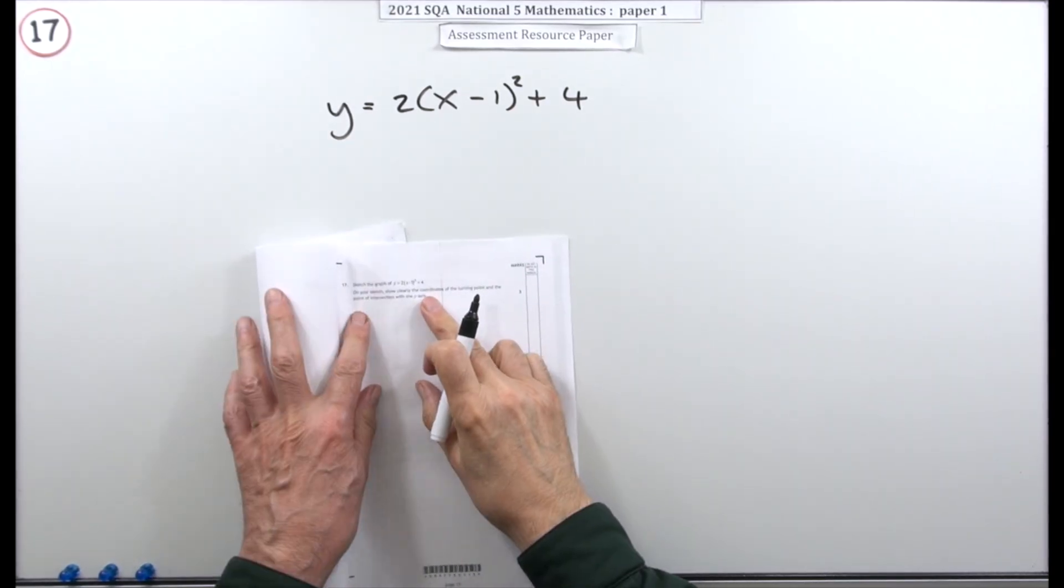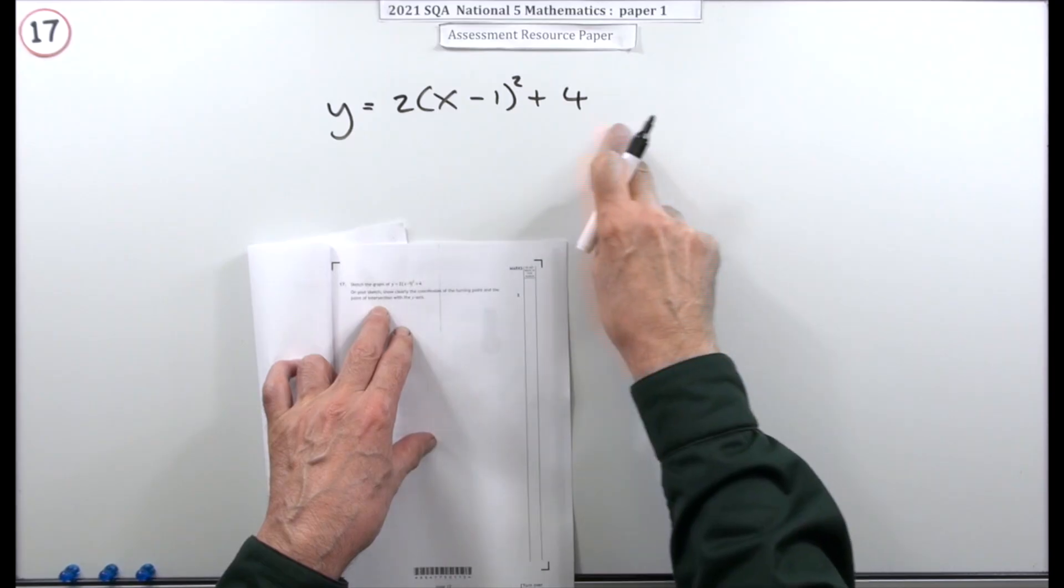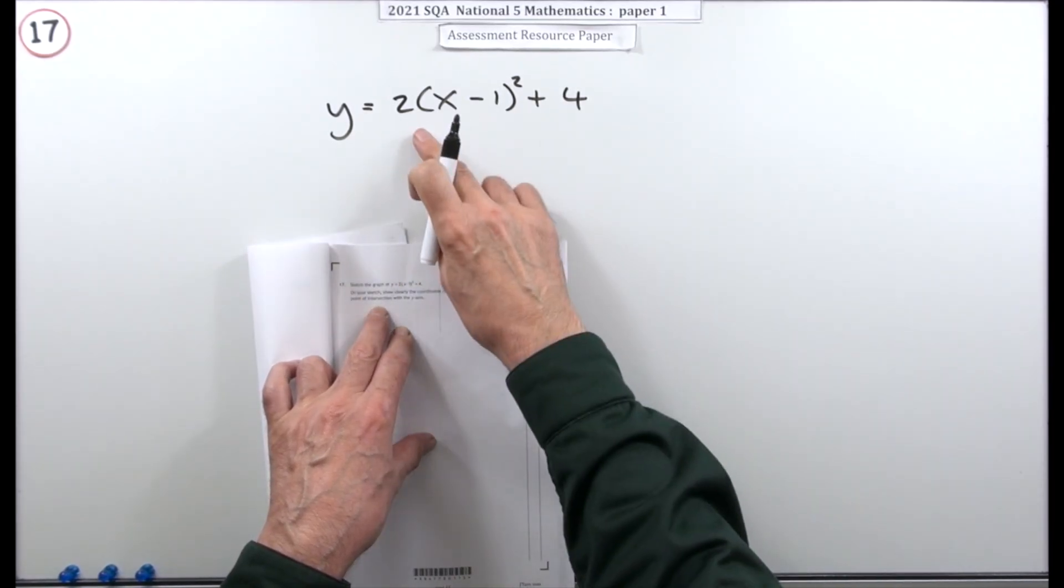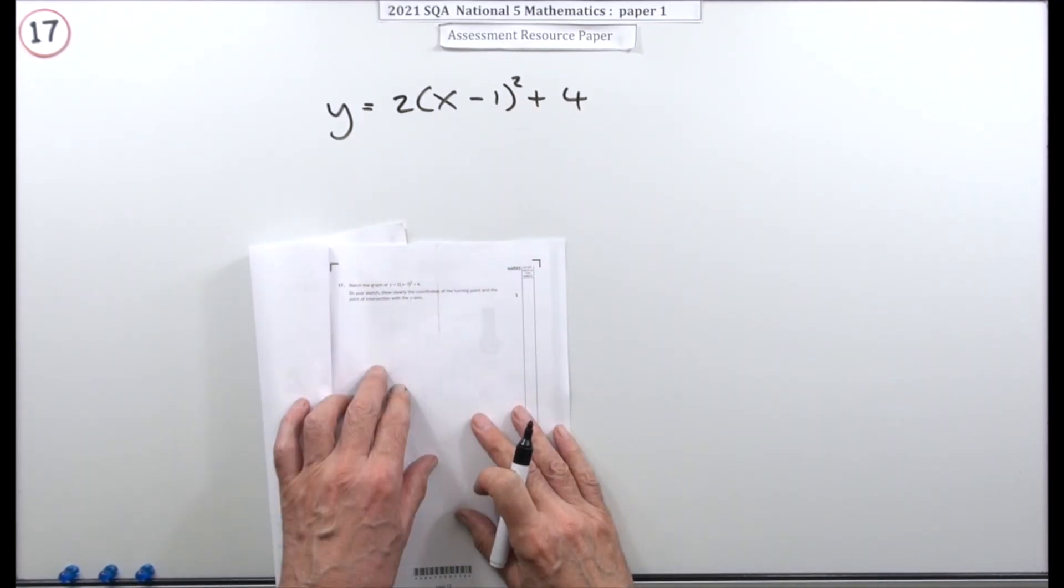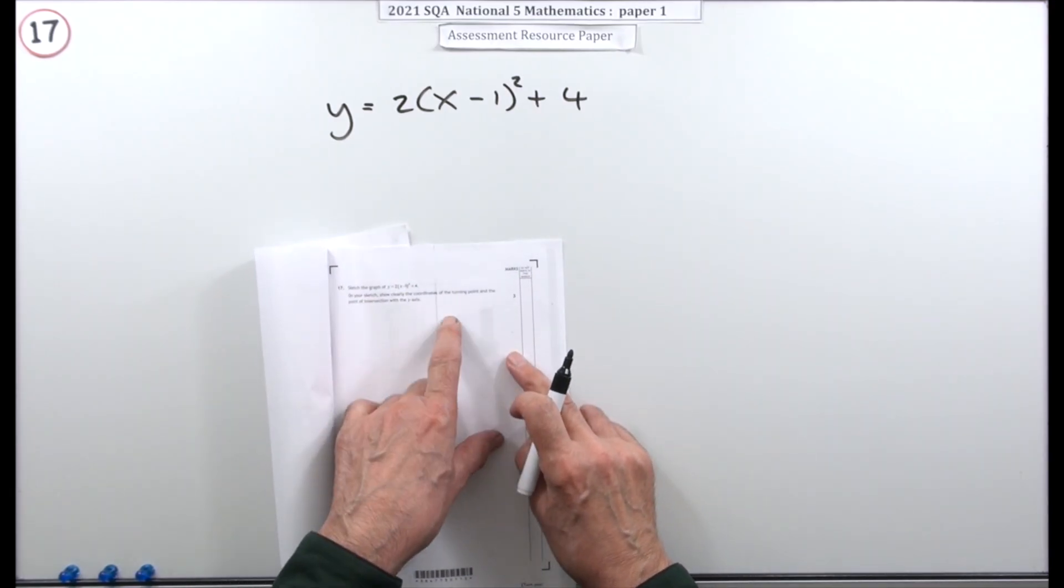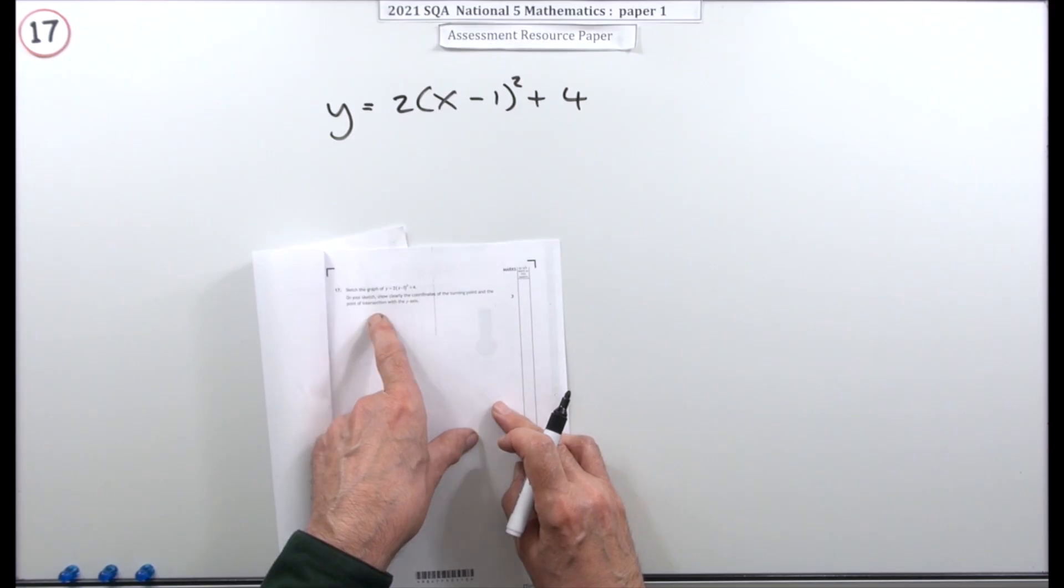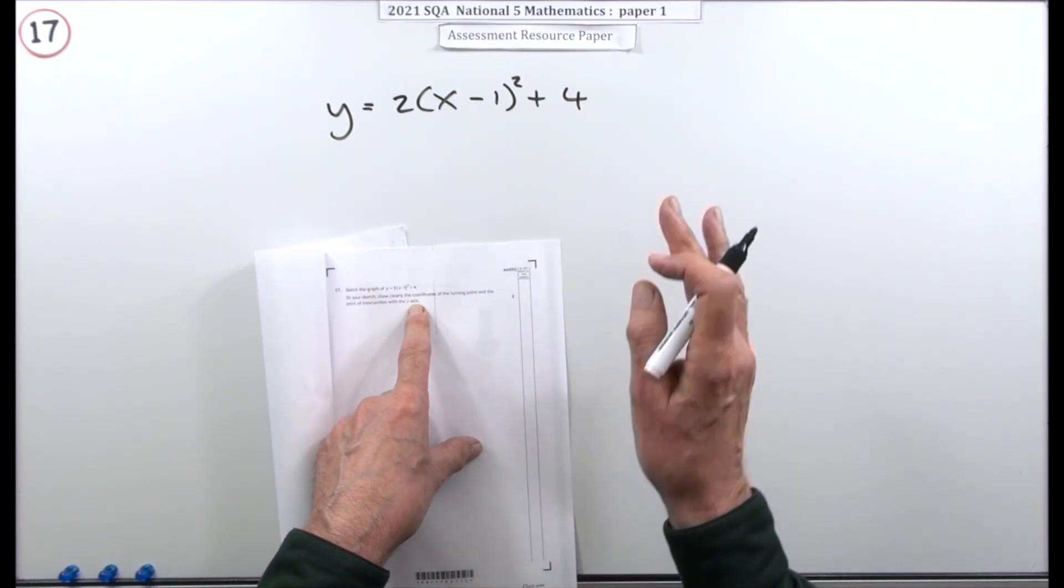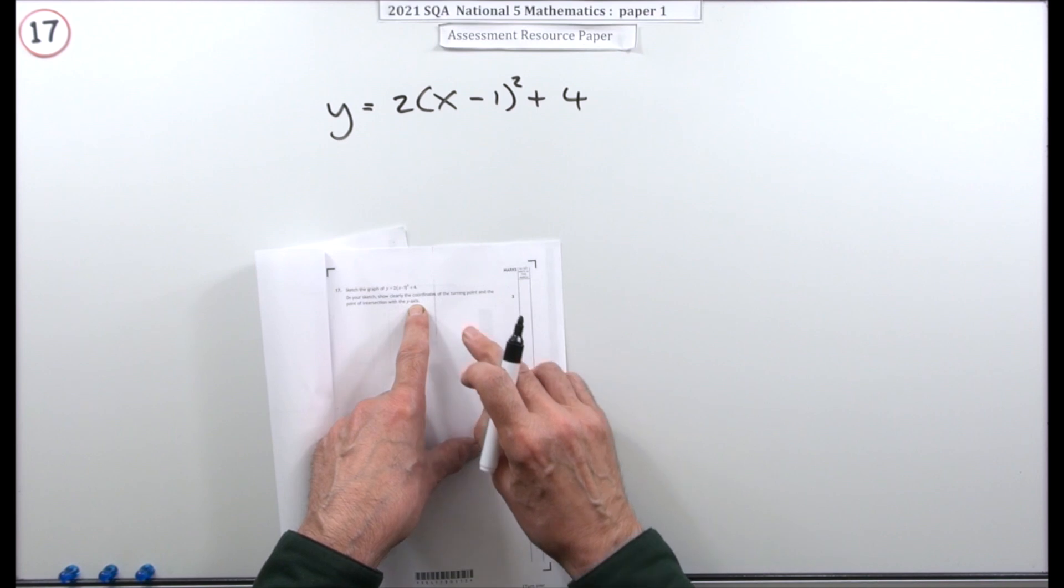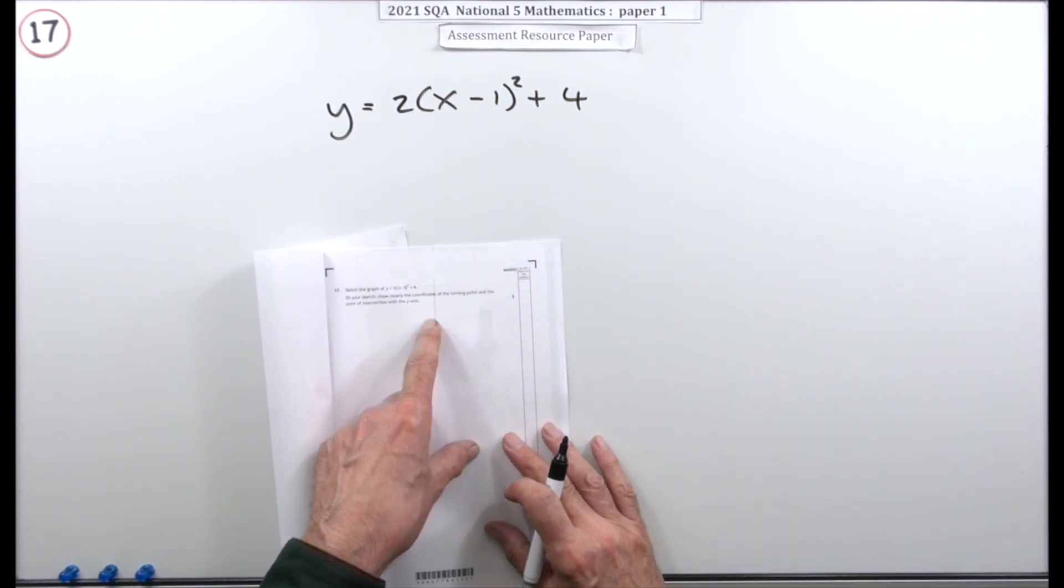So number 17. Sketch the graph given by this equation here for x. 2 times x minus 1 squared plus 4. And on the sketch of this graph you have to show the important things which is where does it cut the axis. It's giving you a clue here by just seeing the point of intersection of the y axis. So it's letting you know it doesn't cut the x axis. But normally in a sketch you would show where it cuts the axis and any turning point.